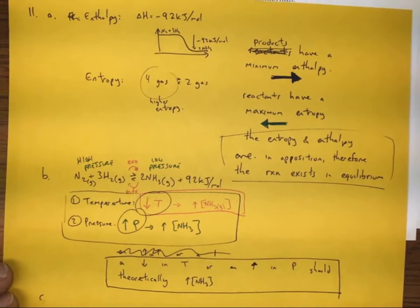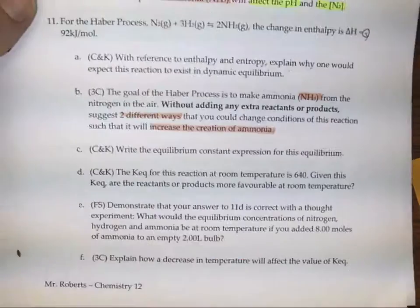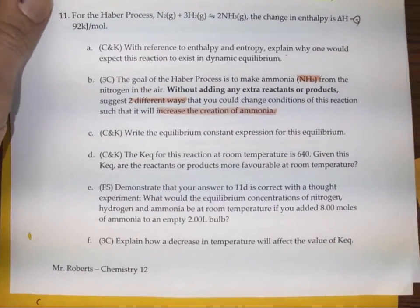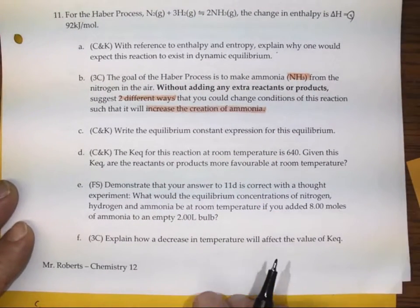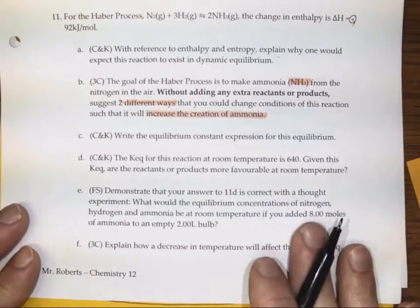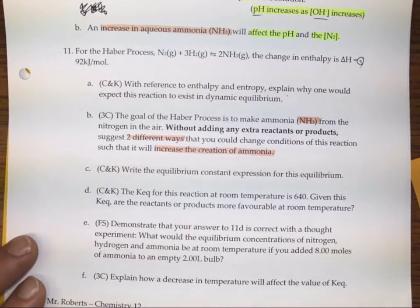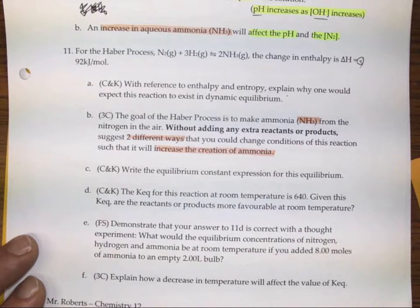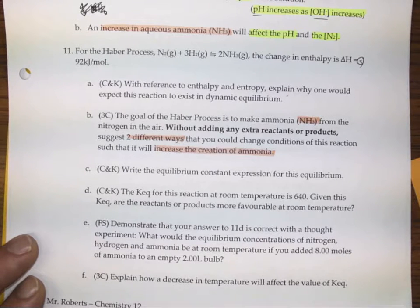So let's move on to question 11C. Question C says: write the equilibrium constant expression for this reaction. We've got to make sure to write the product concentration squared over the nitrogen times the hydrogen gas cubed. That's an equilibrium constant for this expression — pretty straightforward stuff.